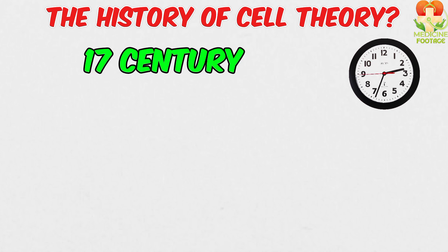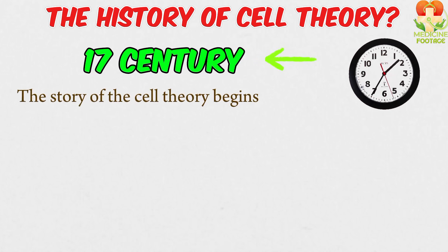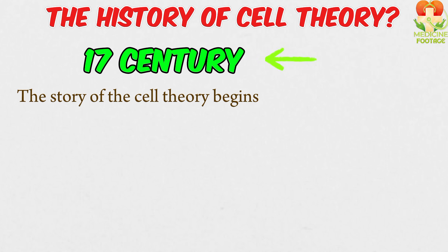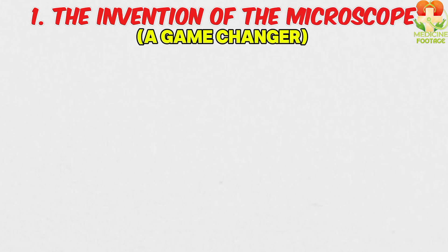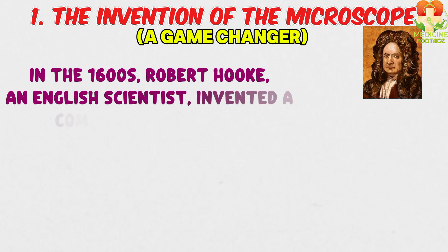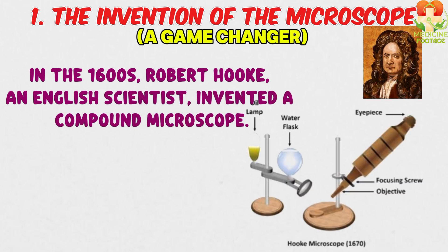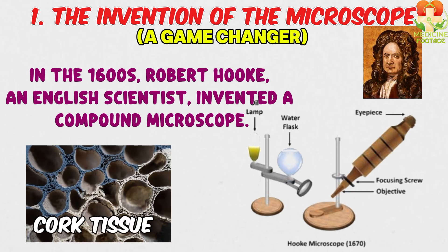The history of cell theory. Let's rewind the clock and go back to the 17th century — this is where the story of cell theory begins, and it all starts with the invention of the microscope. Before microscopes, no one had any idea that cells even existed. The invention of the microscope was a game changer. In the 1600s, Robert Hooke, an English scientist, invented a compound microscope. When he looked at slices of cork under his microscope, he saw tiny box-like structures. These looked like small rooms, or cells, which is where the term 'cell' came from. However, these cells weren't living — they were dead plant cells.